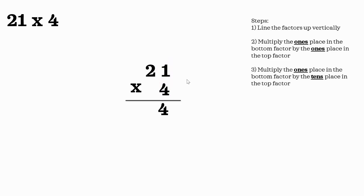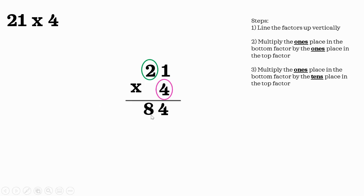Finally, we're going to multiply the ones place in the bottom factor, which is 4, by the tens place in the top factor, which is 2, because the 2 is in the tens place. So we're multiplying 4 ones times 2 tens, which equals 8 tens. So we're putting the 8 in the tens place in our answer, or our product. 21 times 4 equals 84.